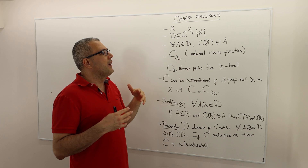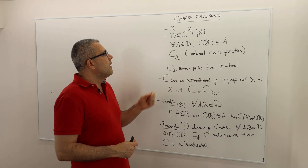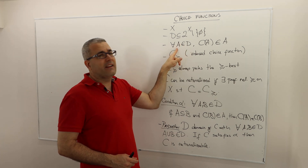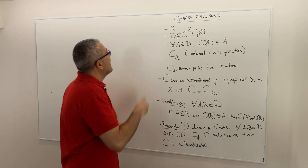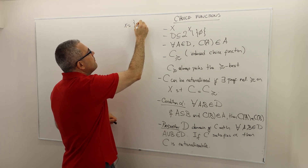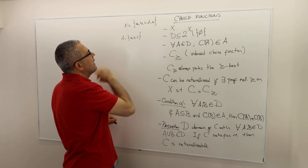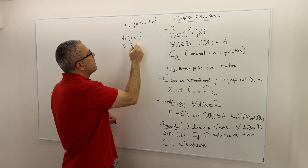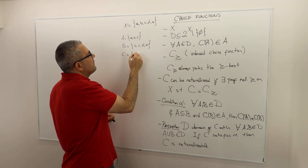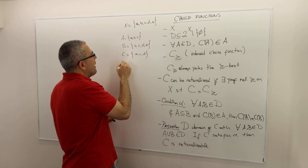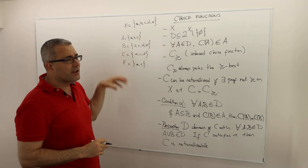For example, X could be {a, b, c, d, e}. Then A might be the subset {a, b, c}, B might be {b, c, d, e}, another set C could be {a, c}, and so on. D is the collection of all such non-empty subsets.